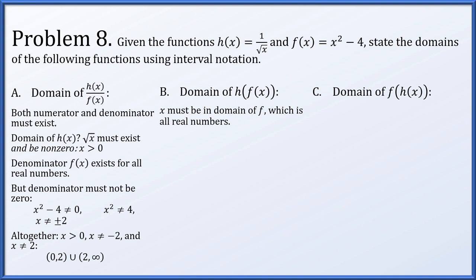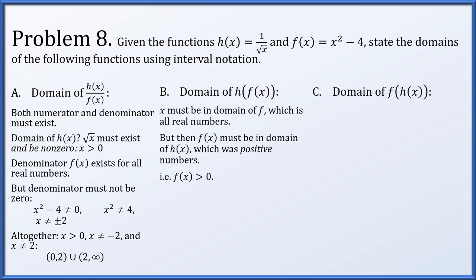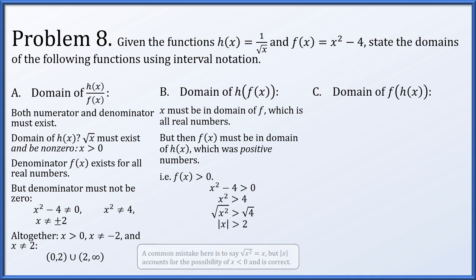For the domain of h of f of x: x first goes into f, which is a polynomial — no restrictions. But f of x must then be positive to be in the domain of h. So x squared minus 4 must be greater than 0, meaning x squared greater than 4. Taking square roots gives the absolute value of x greater than 2 — not just x, since the square root of x squared is the absolute value of x. This gives the domain as negative infinity to negative 2 union 2 to infinity.